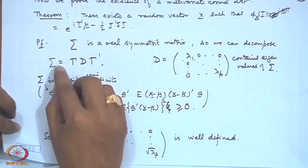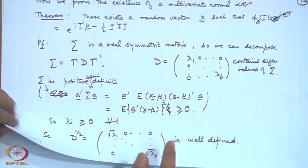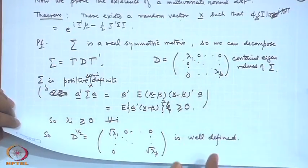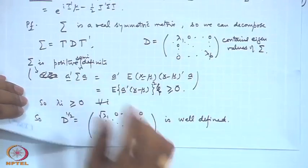Using the characteristic function we derived the distribution of linear combinations. We proved the independence result: if sigma is a diagonal matrix then the components are independent. We also proved that given mu and sigma we can always find a random vector whose distribution is Np with mean vector mu and variance-covariance matrix sigma, using the decomposition sigma = gamma*D*gamma', where D is diagonal with eigenvalues of sigma.